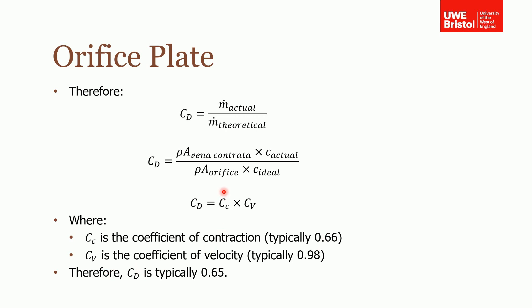So therefore when you times these two together you get the discharge coefficient. Times these two together it's typically around 0.65. The discharge coefficient is typically 0.65 for an orifice plate meter.